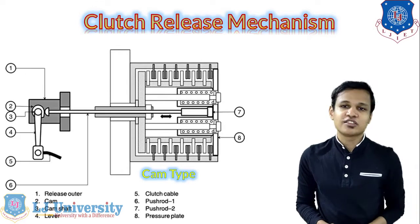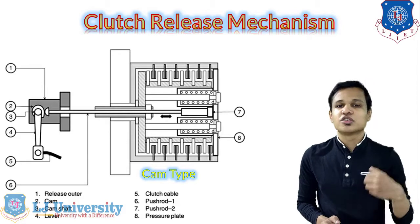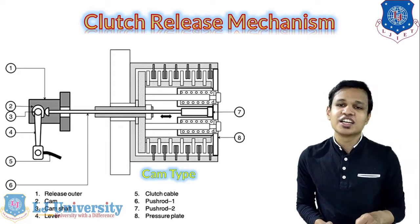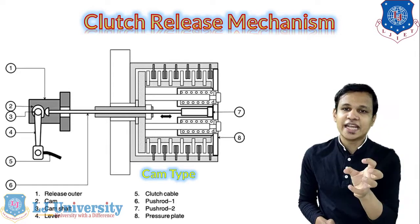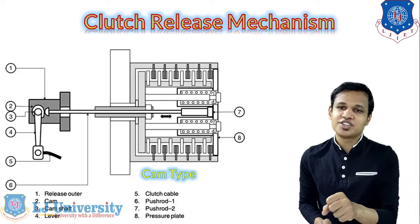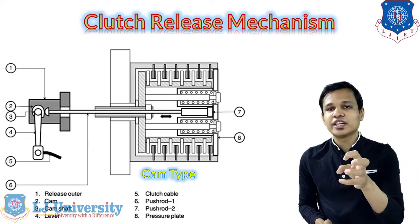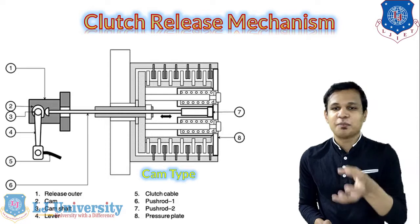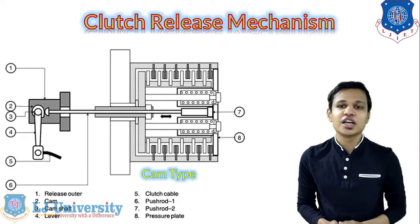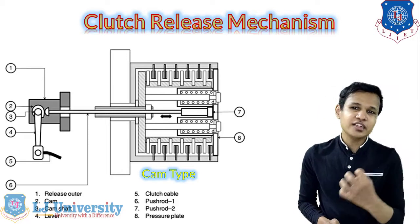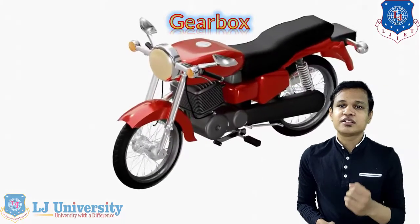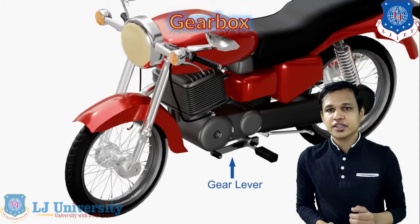The second type used in the clutch release mechanism is the cam type release mechanism. In this, a cam is provided in place of a screw. The shape of the cam is such that whenever we push the clutch lever, the outer end of the cam is in contact with the shaft connected to our clutch shaft. When we push the clutch lever, the tension in the clutch cable causes the cam to rotate, pushing the diaphragm spring, which disengages the pressure plate. At that point, we can change gears. These are the two basic styles of clutch release mechanism used in two-wheeler vehicles.